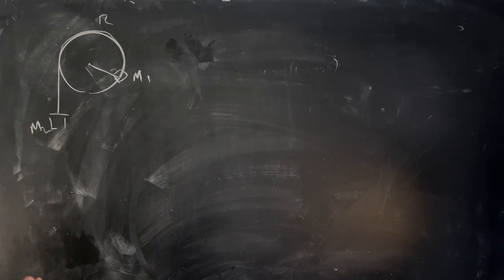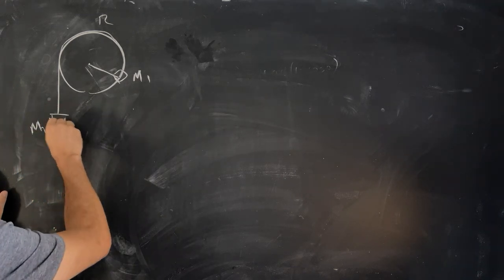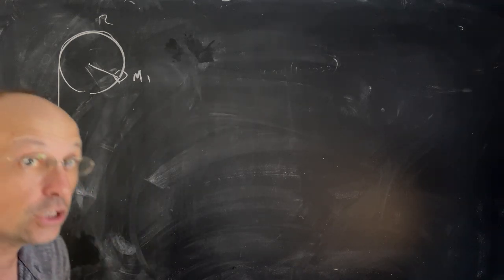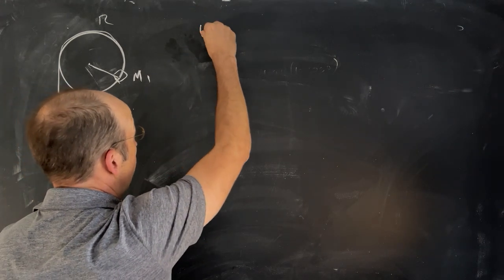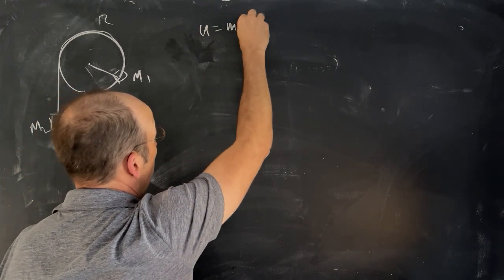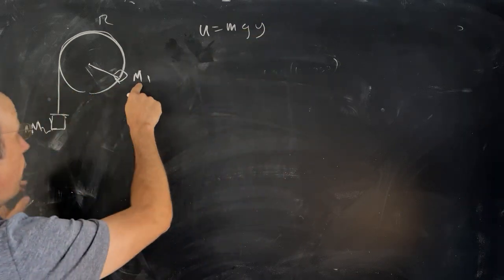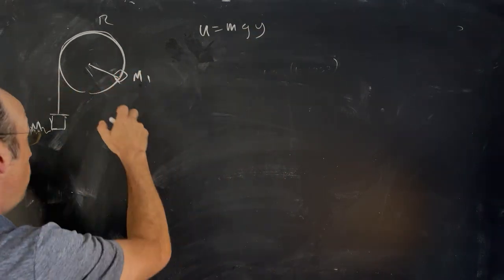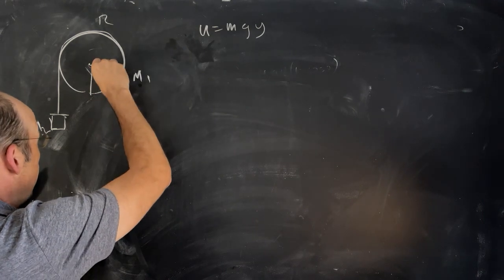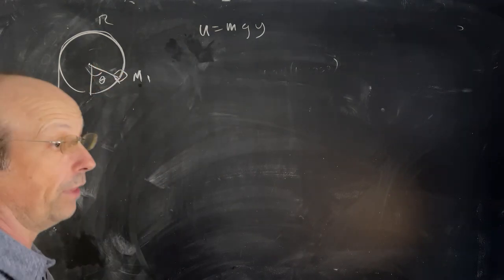Let's go ahead and write the, that's a block, the potential energy for this system. So remember for potential energy near the surface of the earth we have mgy. So I have mgy for that one and mgy for that one but you can see that as this thing rotates, I could describe everything in terms of one variable, the angle theta.